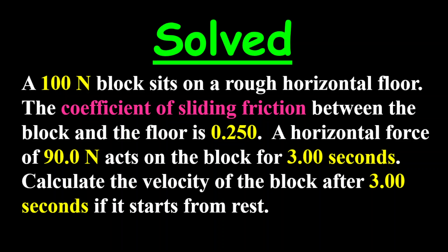The question reads: a 100-Newton block sits on a rough horizontal floor. The coefficient of sliding friction between the block and the floor is 0.250. A horizontal force of 90.0 Newtons acts on the block for 3.00 seconds.